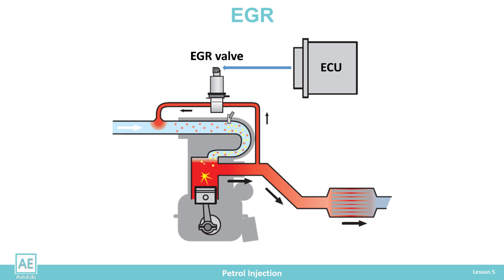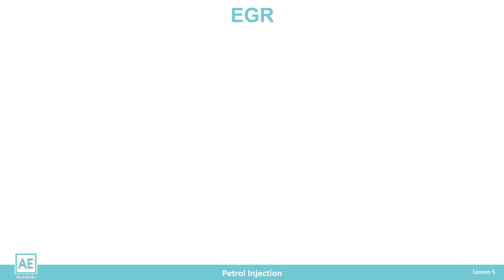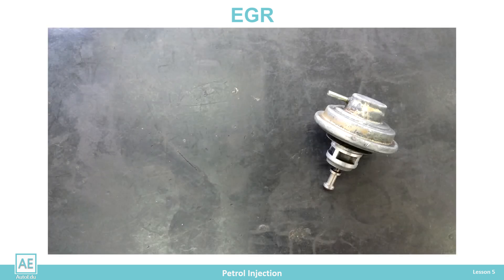EGR opens only under conditions of increased concentrations of nitrogen oxides. However, exhaust gas introduction into the intake manifold cannot always be done in all states because it would disturb engine operation. In the following cases, the EGR valve does not open.